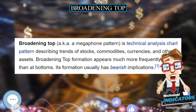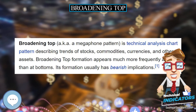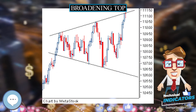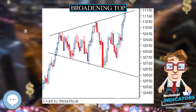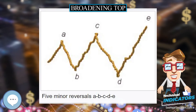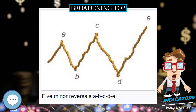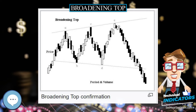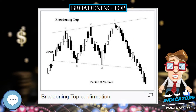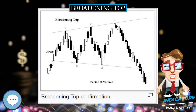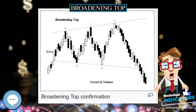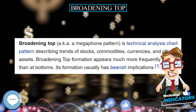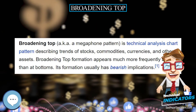Broadening top formation appears much more frequently at tops than at bottoms, and its formation usually has bearish implications. It is a common saying that smart money is out of the market in such formation and the market is out of control. Most of the selling is completed in the early stage by big players, and participation is from the general public in the later stage.